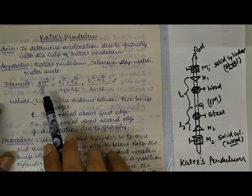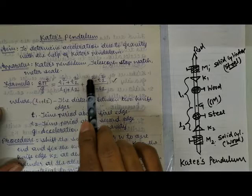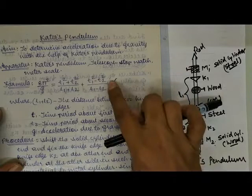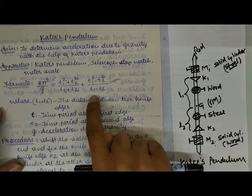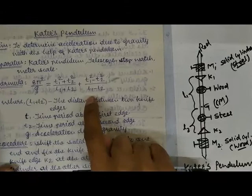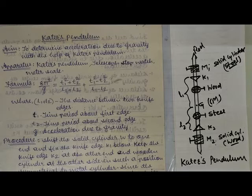Now comes the formula. It is: 8π² divided by g equals T1² plus T2² divided by (L1 + L2), plus T1² minus T2² divided by (L1 − L2). L1 and L2 are the distances of the corresponding knife edges from the centre of mass.